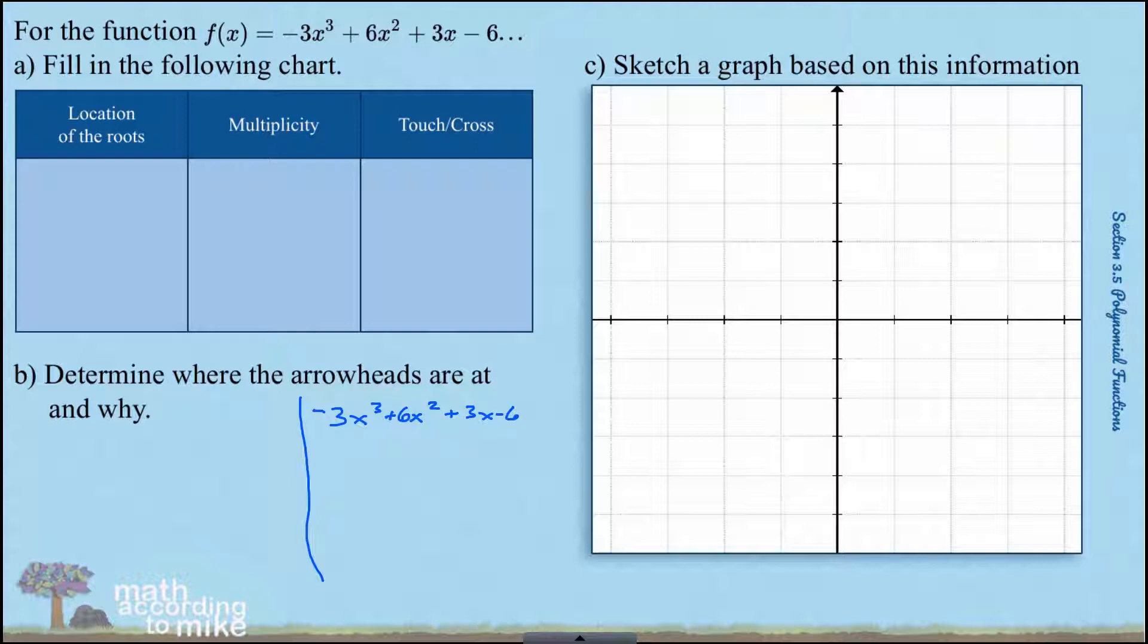Remember, the first rule of factoring is to pull out a greatest common factor. Don't say 3. Pull out more than that. It's best if your leading coefficient is positive 1. So let's pull out a negative 3. Doing so leaves us with x cubed minus 2x squared minus 1x plus 2.